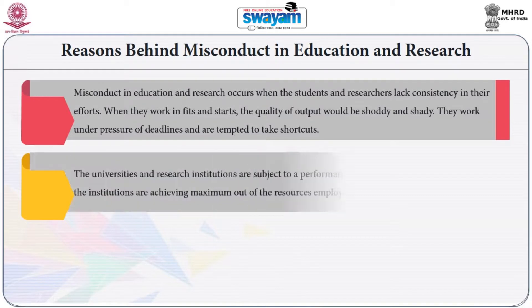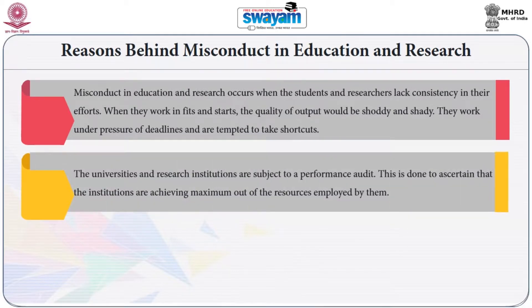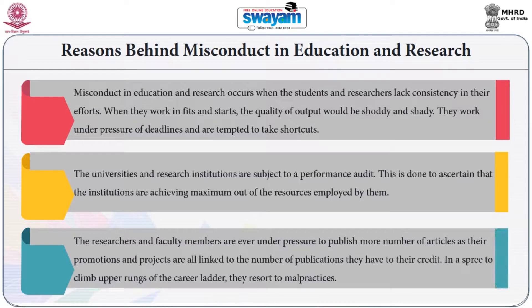The universities and research institutions are subjected to a performance audit. This is done to ascertain that the institutions are achieving maximum out of the resources employed by them. The researchers and faculty members are ever under pressure to publish more number of articles as their promotions and projects are all linked to the number of publications they have to their credit. In a spree to climb the upper rungs of the career ladder, they resort to malpractices.